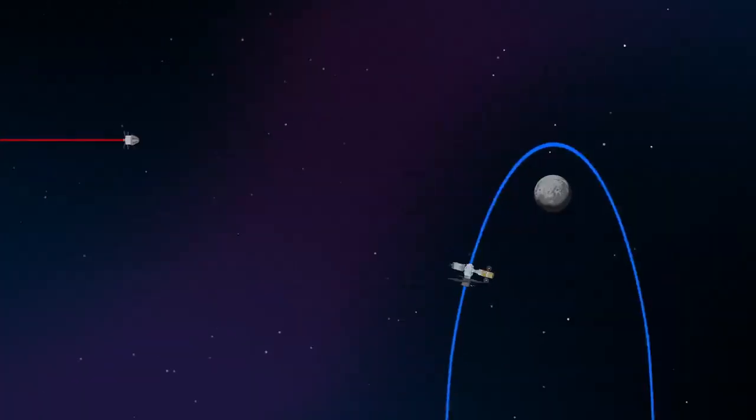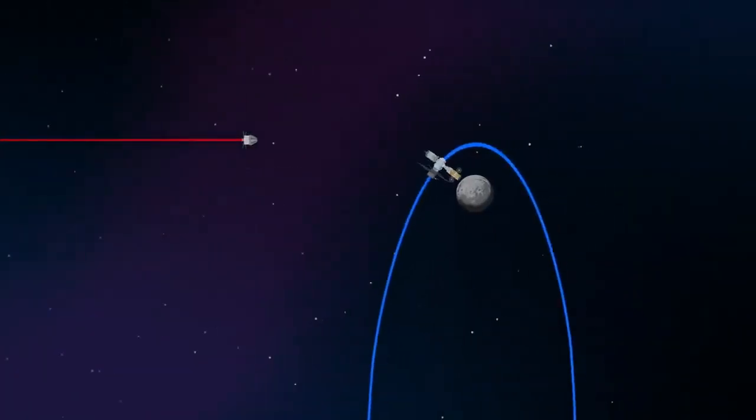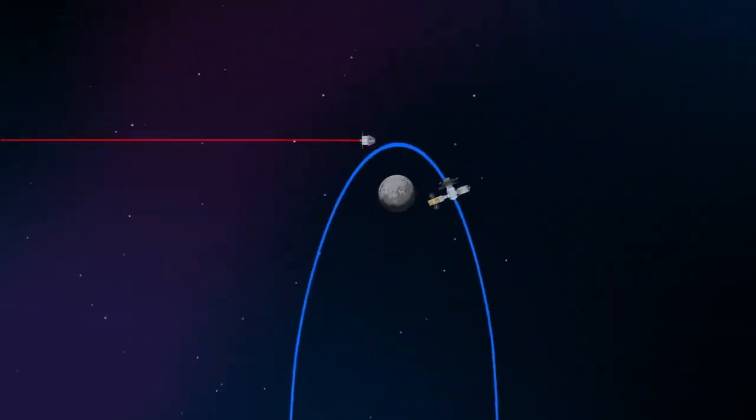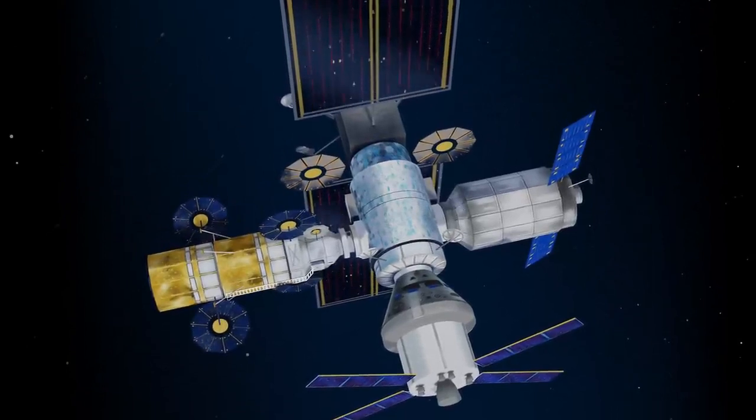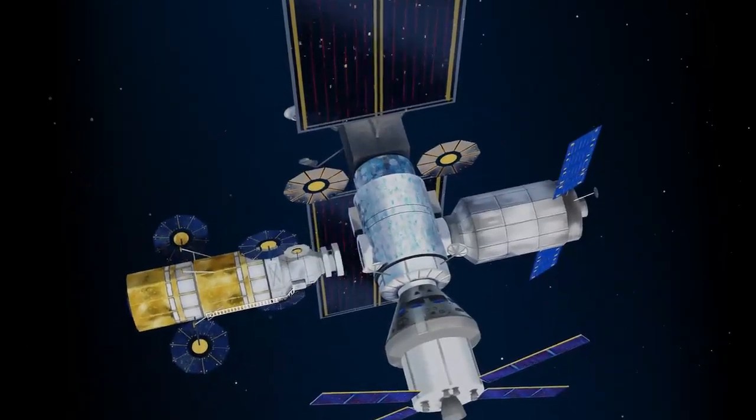Returning to our crew as they approach Gateway, the Orion must match the elliptical orbit of the station in order to successfully dock. Once on board, pre-selected crew members transfer to the lunar lander, while those assigned to Gateway remain on station.